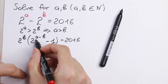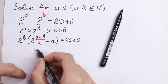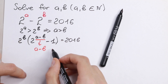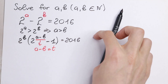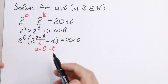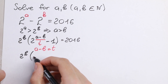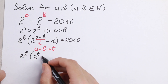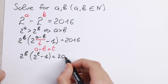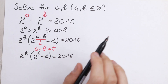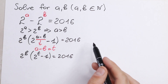It's really good to write a substitution here. Let A minus B equal T — it will be better to work with it. So using this substitution we have: 2 to the power B times (2 to the power T minus 1) equals 2016. I hope you understand this step — just factoring out 2 to the power B.